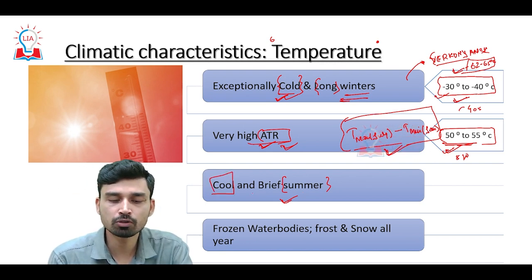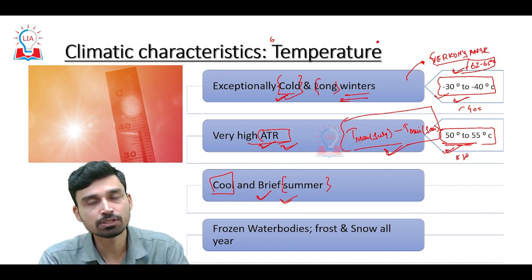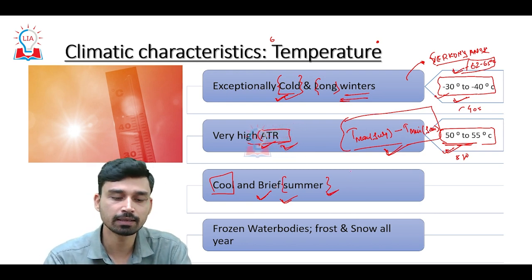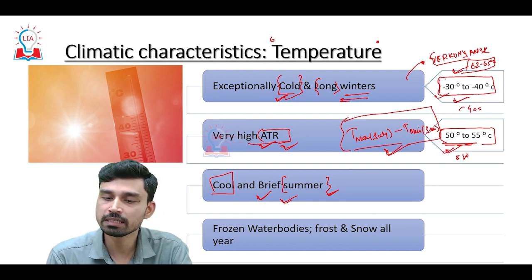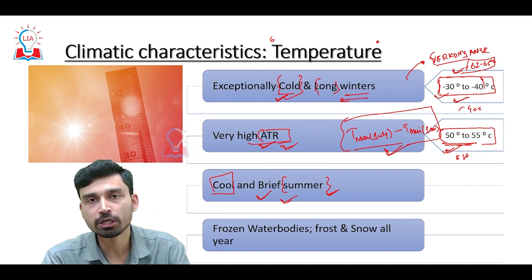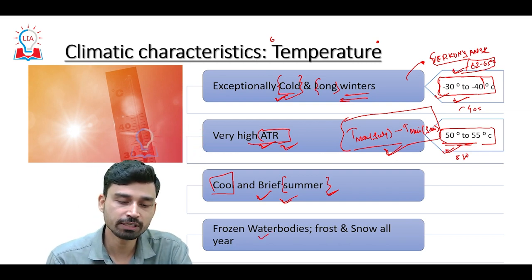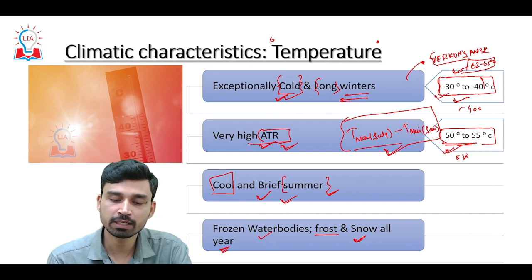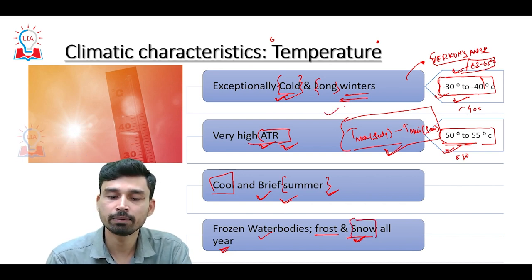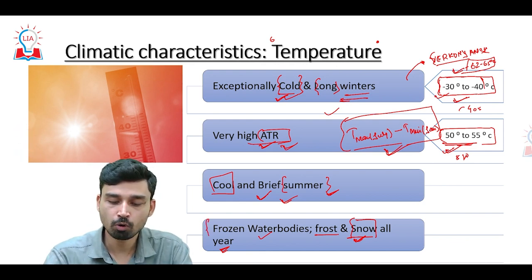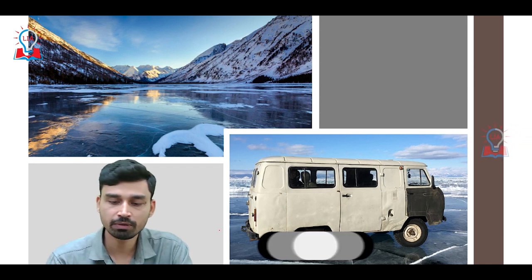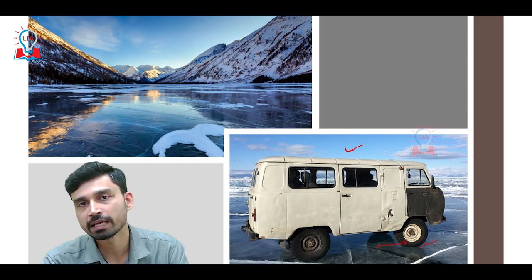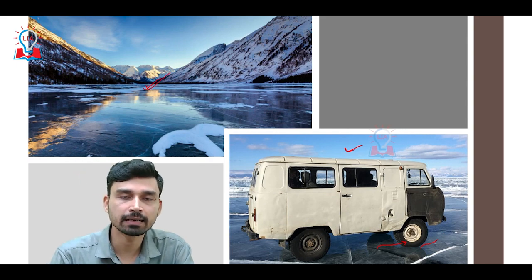Summers in the Taiga are also not very warm but cool in nature, and very brief in duration. Seasons such as spring and autumn are also very brief and are referred to as transitional seasons rather than actual seasons. Since temperatures drop so significantly, all water bodies in this climatic zone obviously freeze. There is also large-scale development of frost near the ground surface, and snowfall occurs both in winter and sometimes in summer.